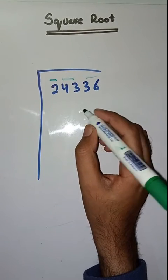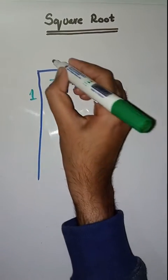So, first we have to solve two. So, we take a number one. One times one? One.